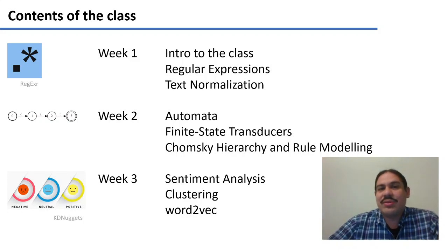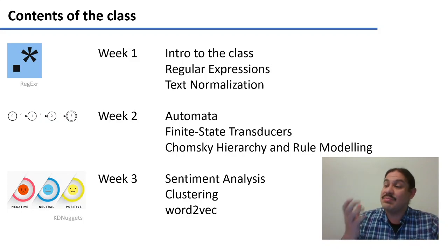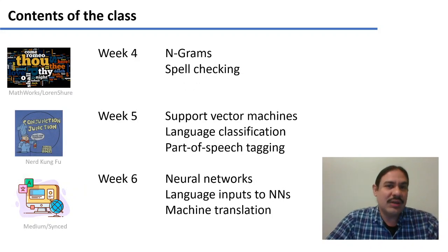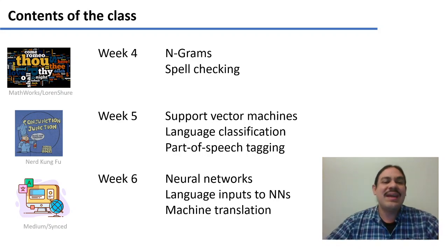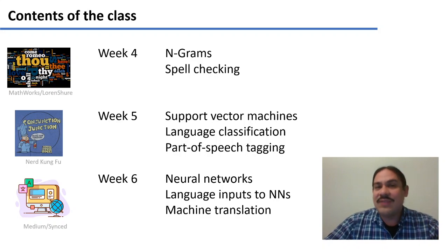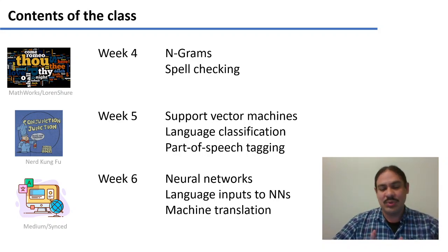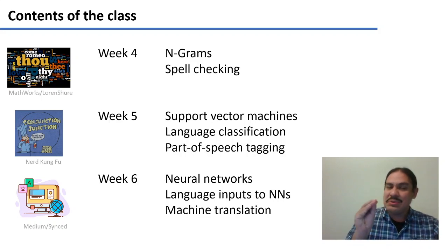On week three, we're going to work on supervised learning. We're going to study sentiment analysis, clustering of documents, and a tool called Word2Vec, which tries to find the meaning of a word based on its neighboring words. On week four, we're going to study n-grams — what words follow one another — and we're going to look at spellcheck. On week five, we're going to start our machine learning exploration with support vector machines, which can help us classify structures such as dialect, language identification, and parts of speech — whether something is a noun, a verb, or a conjunction.